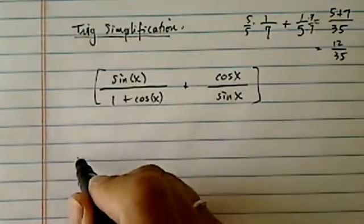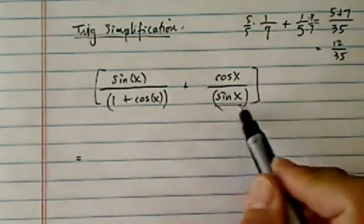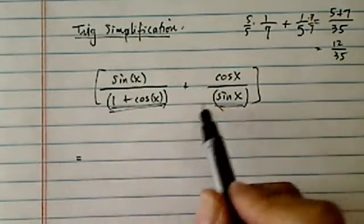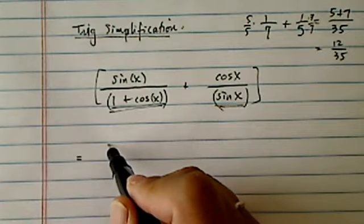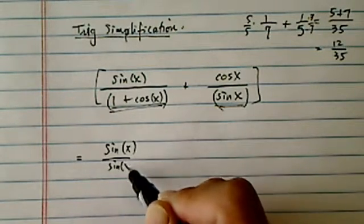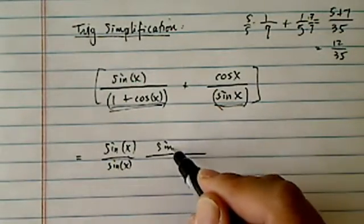We're going to do exactly the same thing, only this time the denominators are a little more complicated. I have a sine x, I have a 1 plus cosine x, they have nothing in common whatsoever, so I'm going to multiply the first one that's missing sine x. So I'm going to copy it over here.